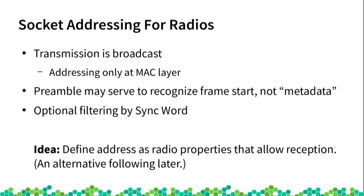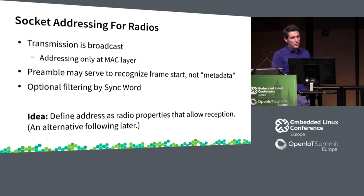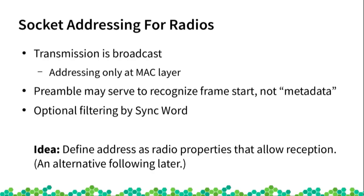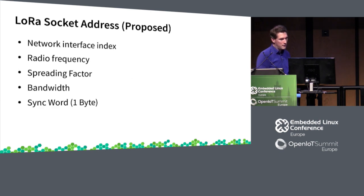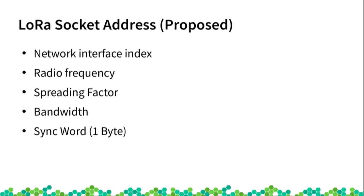The only way to filter at the physical layer is by so-called sync words — a sequence of one or more bytes providing a very limited addressing mode to distinguish various packets. My idea was to use the relevant radio properties that determine whether you can actually receive a given packet as the 'address' you are sending or receiving from. For one, since there is no addressing, you can't do any automatic routing of packets, meaning you need to explicitly specify which LoRa interface to use.